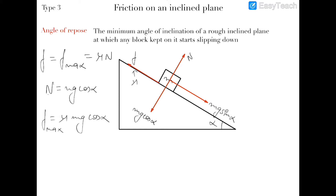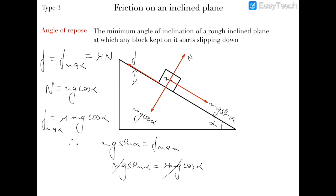To find the boundary angle, we set mg sin α equal to f_max: mg sin α = μ mg cos α. Cancelling mg gives tan α = μ, so α = tan⁻¹(μ), which we already know as the angle of friction.